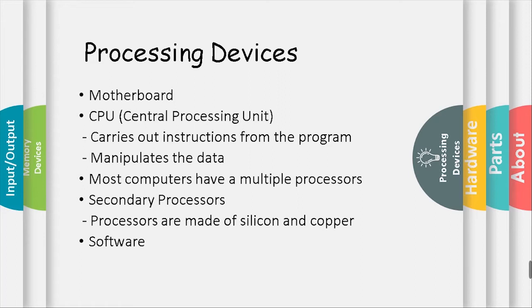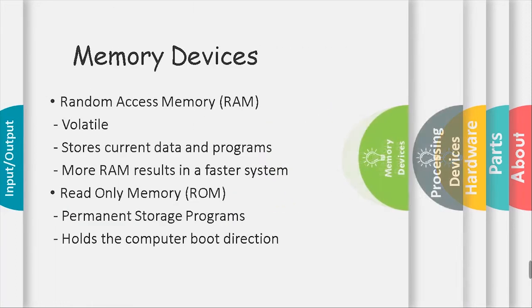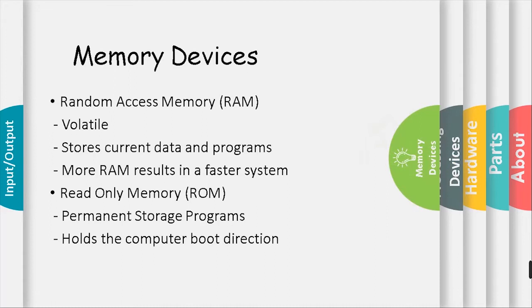Software tells the computer what to do and is also called a program. Memory devices include Random Access Memory or RAM, which is volatile and stores current data and programs — more RAM results in a faster system. Read Only Memory or ROM provides permanent storage programs and holds the computer's boot directions.